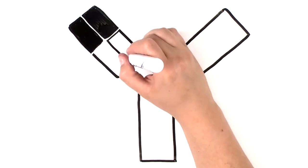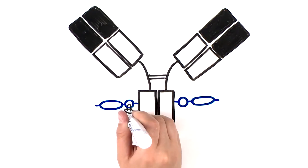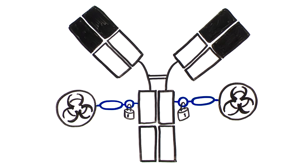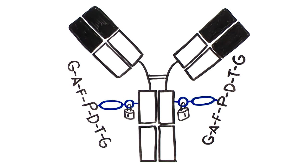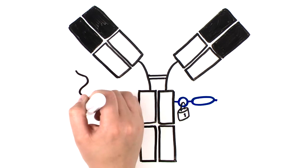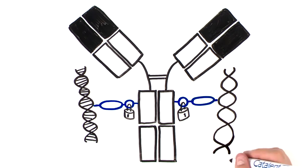Proprietary biocompatible SmarTag chemistry is used to generate a stable attachment of toxins, small molecule drugs, fluorophores, peptides, RNA, DNA, and other proteins via a very stable carbon-carbon bond to the aldehyde group.